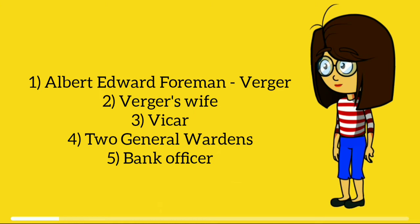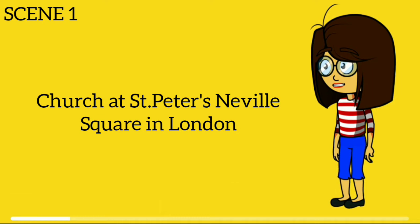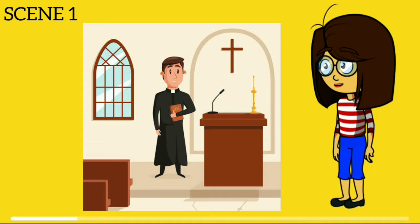The setting of the short story took place in London. Now let us move to the outline summary. Scene 1: Church at St. Peter's Neville Square in London. Once there lived a Vajah named Albert Edward Foman who had been Vajah in a church for the past 16 years.